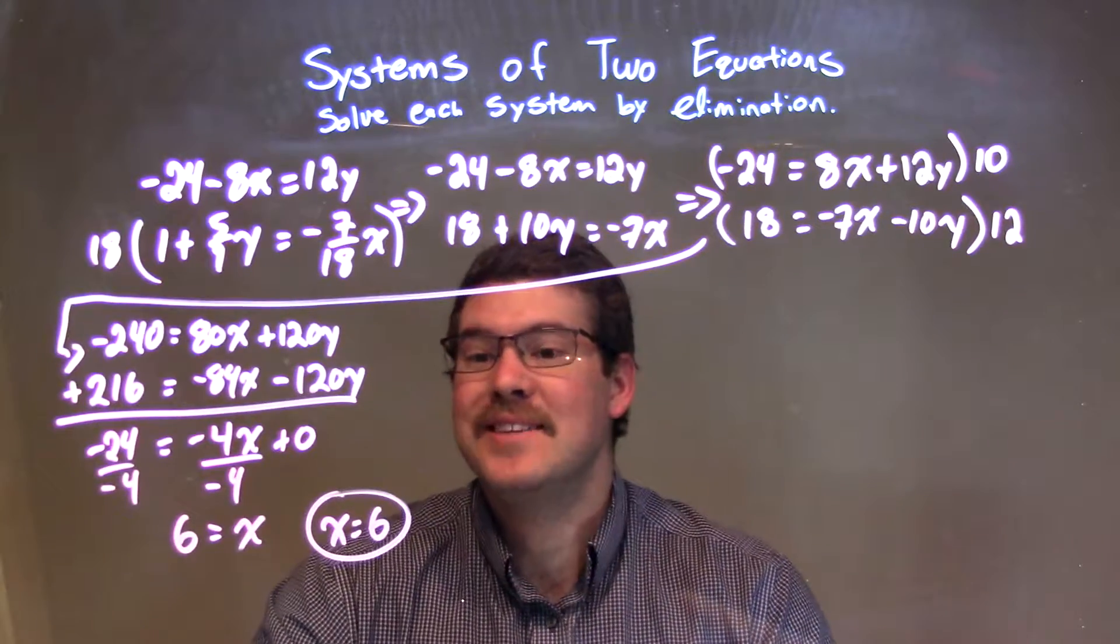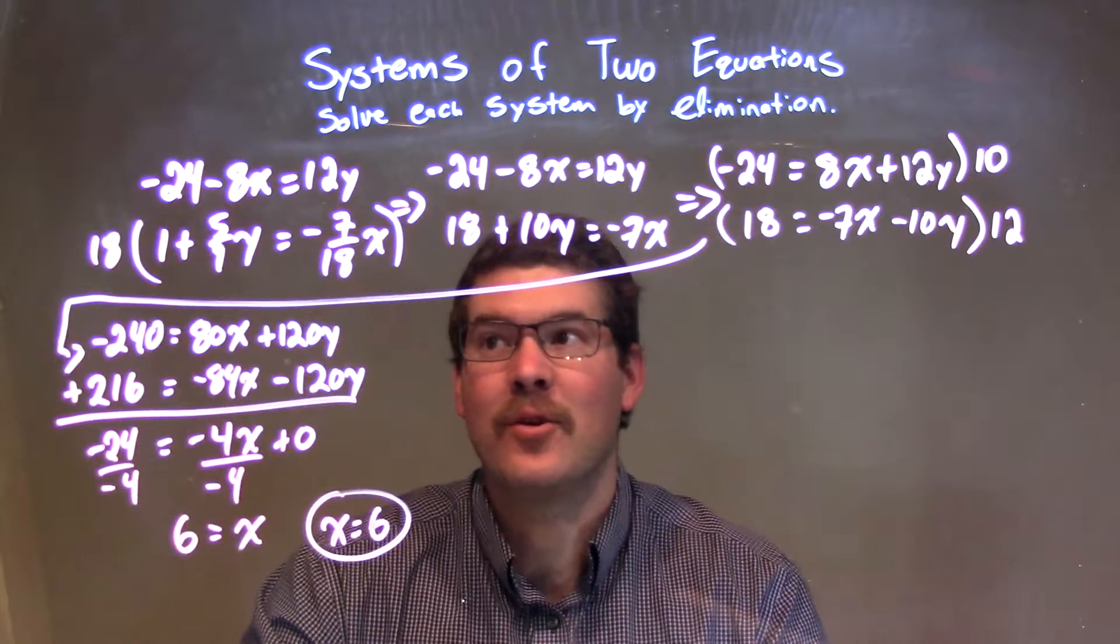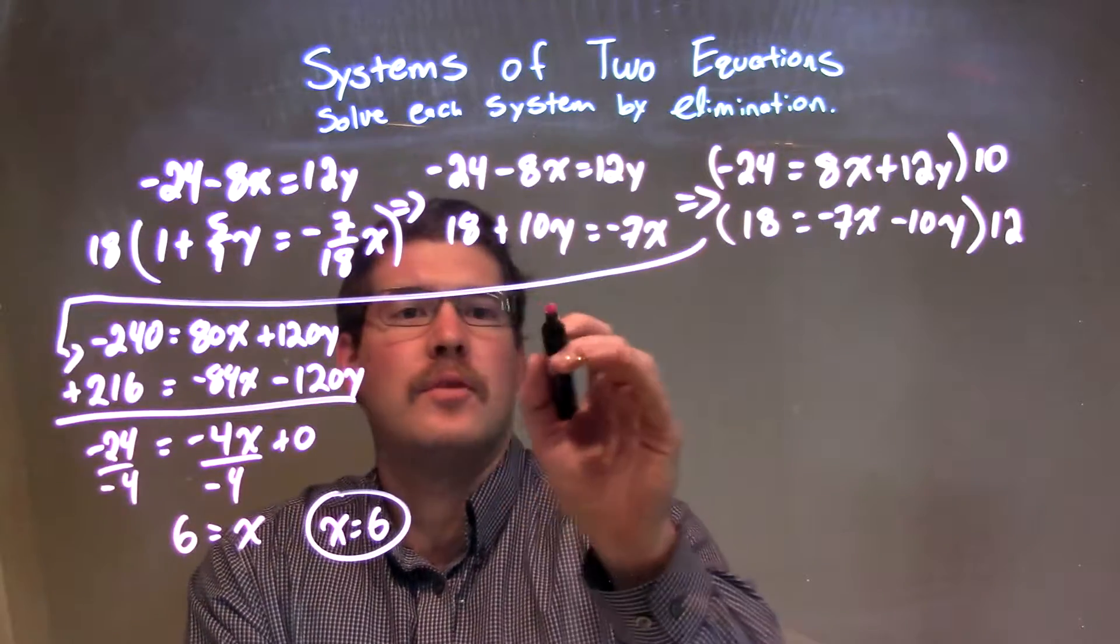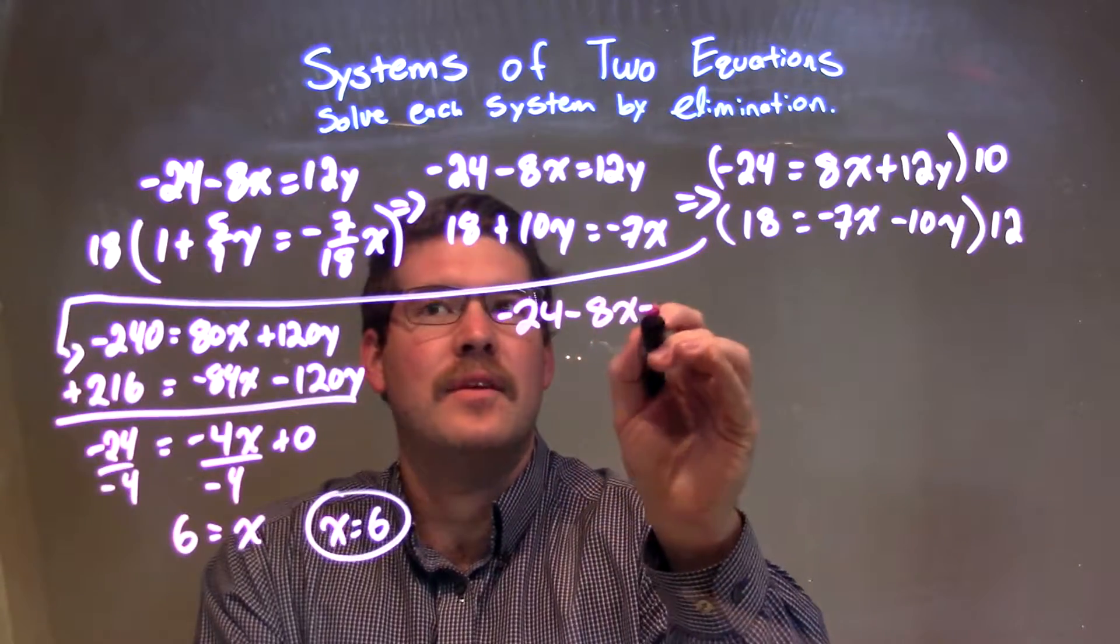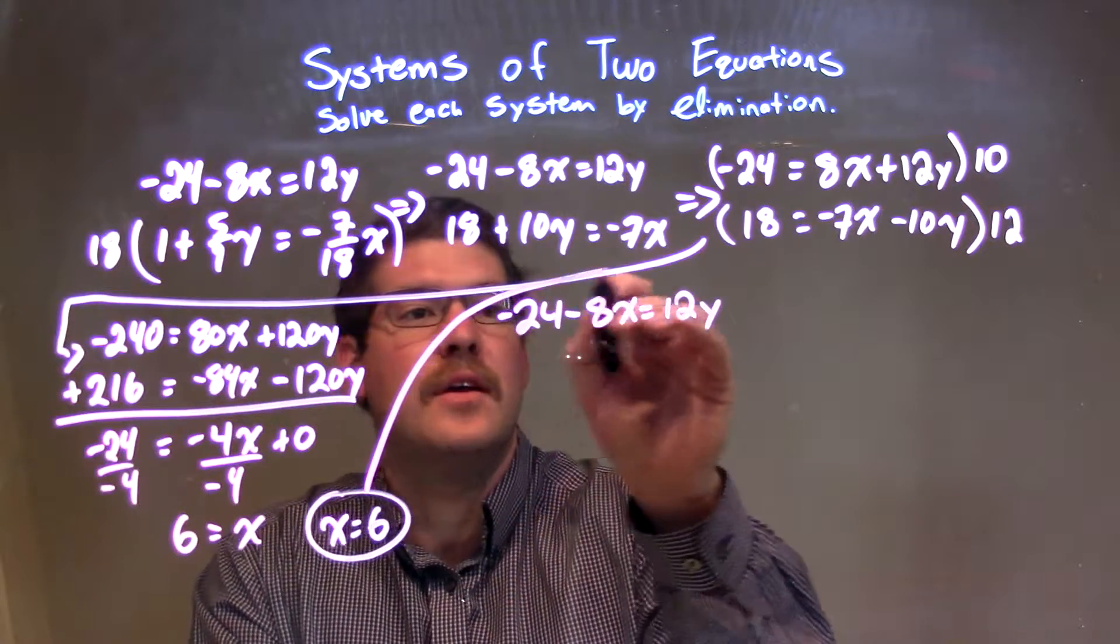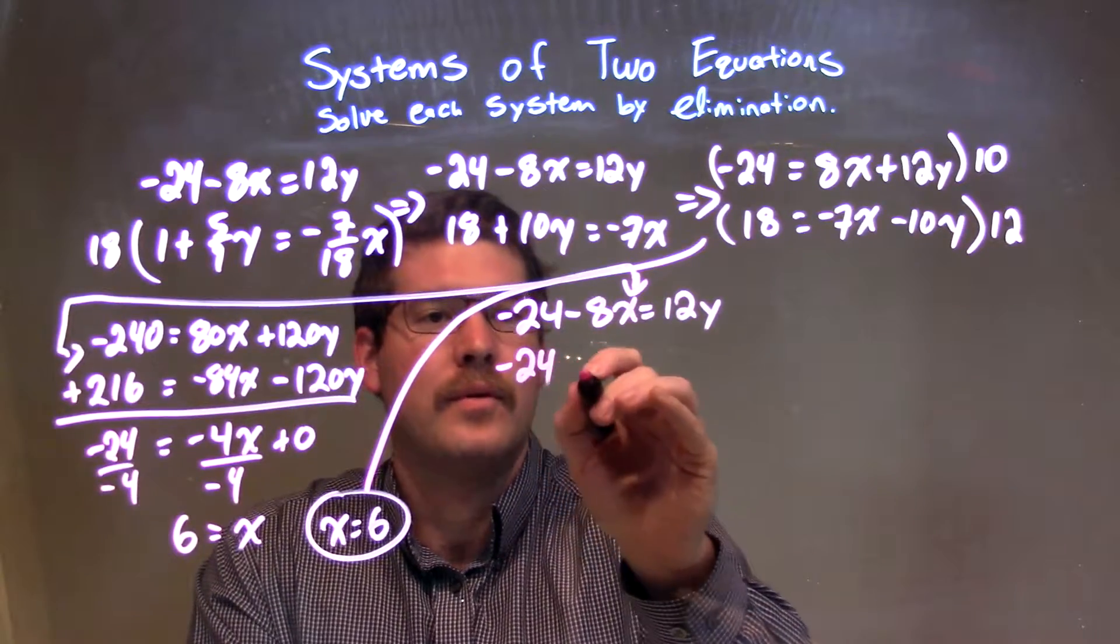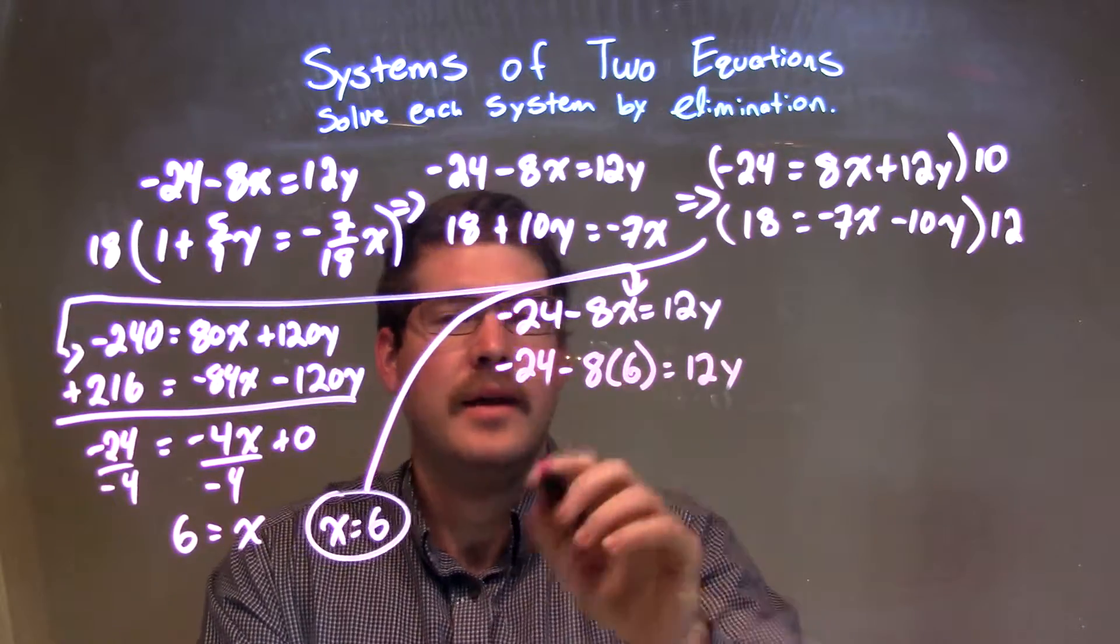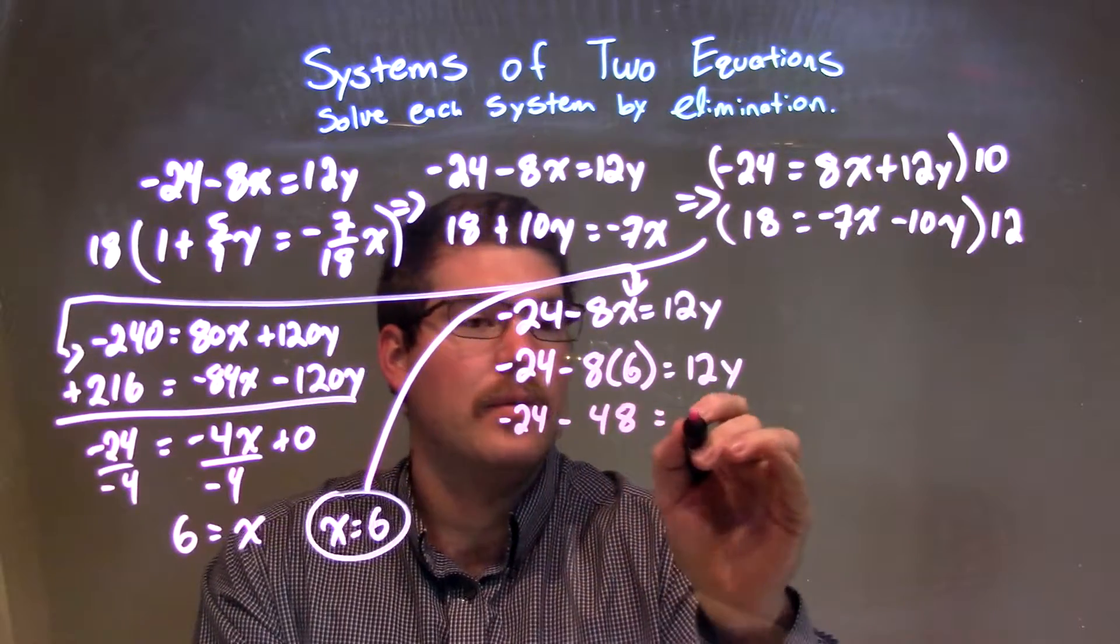So, now, pretty easy, we just need to substitute that back into one of our equations. Personally, I'm going to pick the first equation. We have negative 24 minus 8x equals 12y. I'm going to try and solve for y. So, I'm going to plug 6 in for x. We have negative 24 minus 8 times 6 equals 12y. 8 times 6 is 48. So, we have negative 24 minus 48 equals 12y.